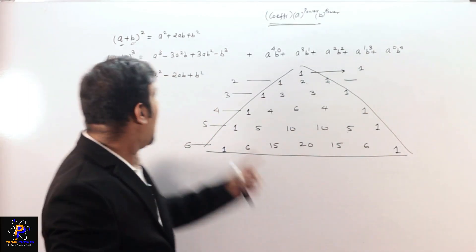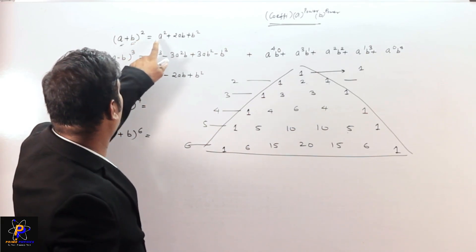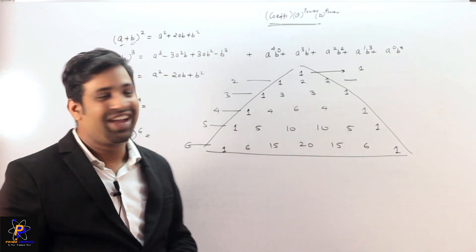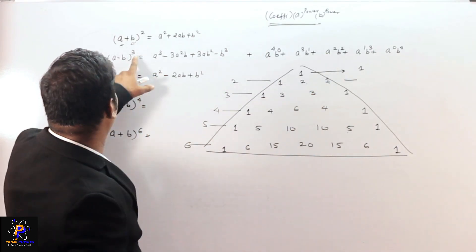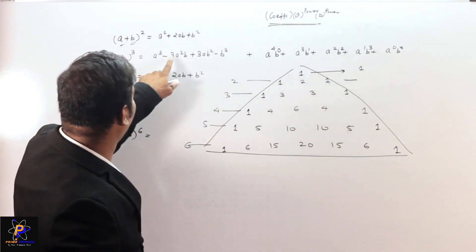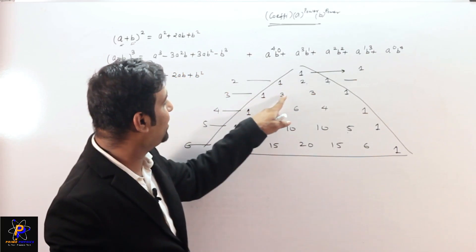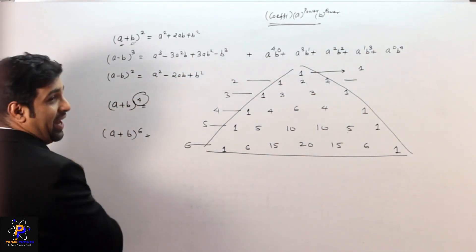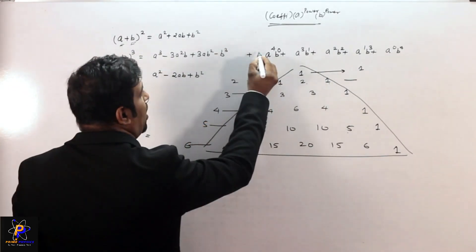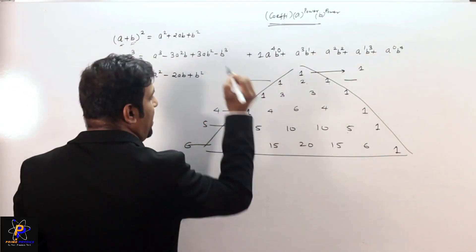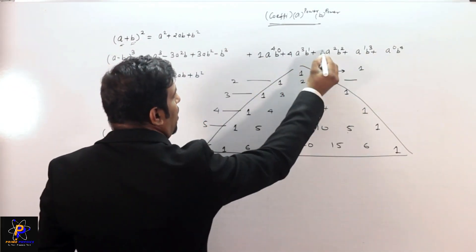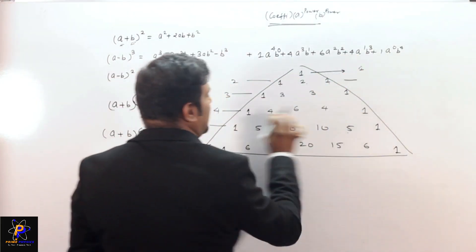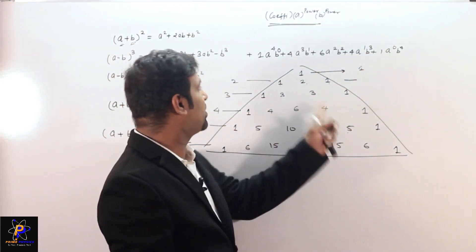So now, if power is 2, the coefficients are 1, 2, 1. If power is 3, the coefficients are 1, 3, 3, 1. We are making raise to 4, so the coefficients are 1, 4, 6, 4, 1. This is how Pascal's triangle gives us the coefficients directly.